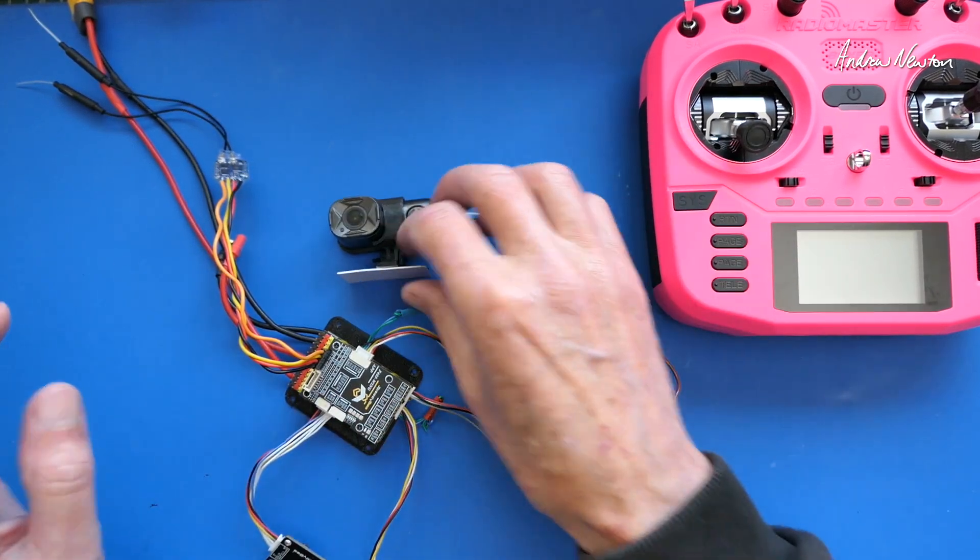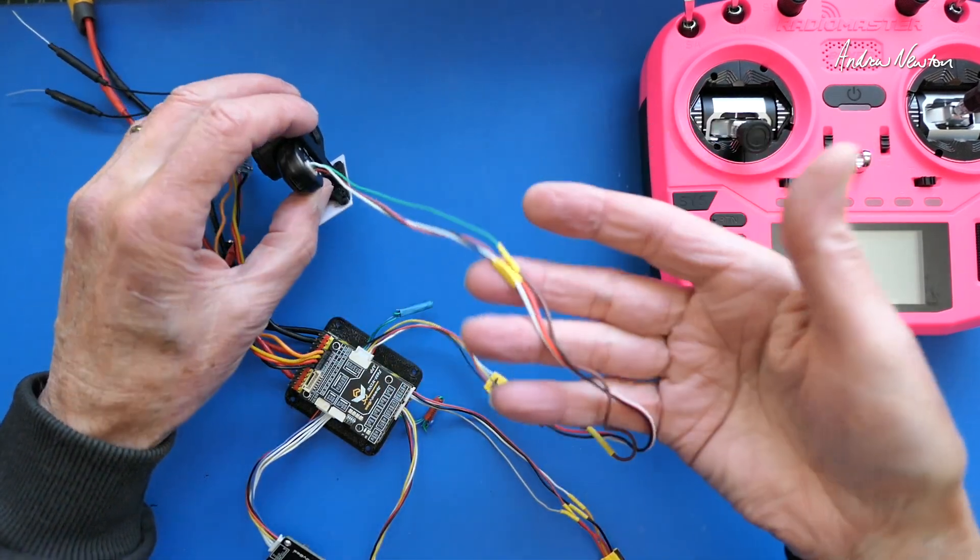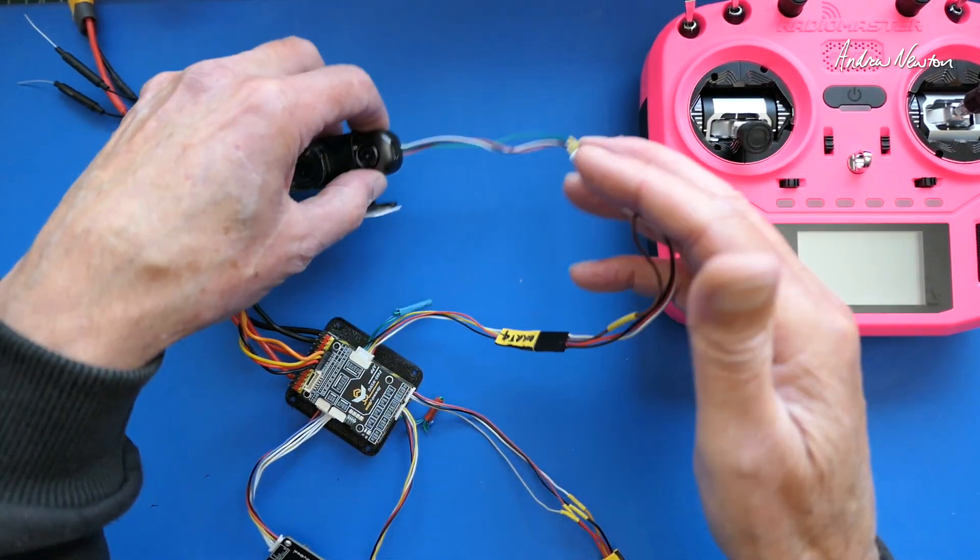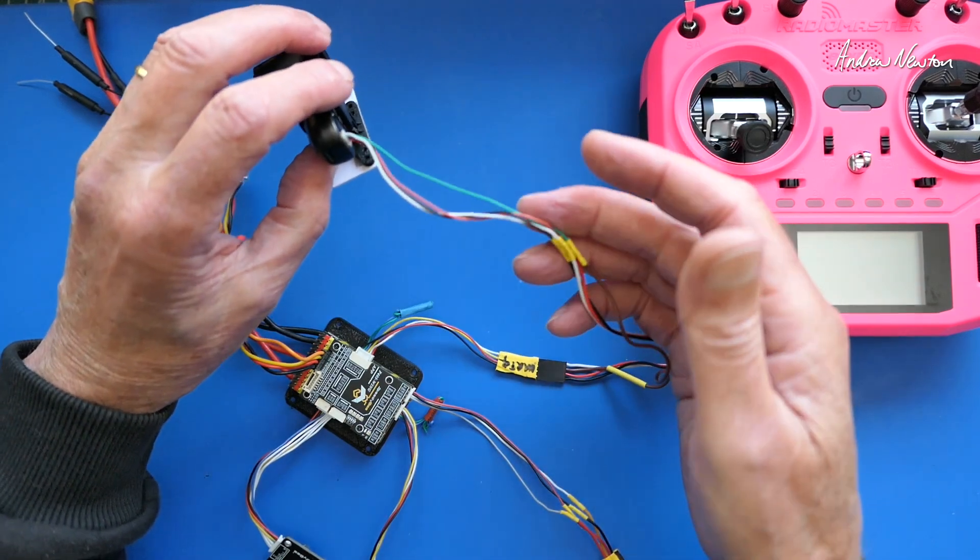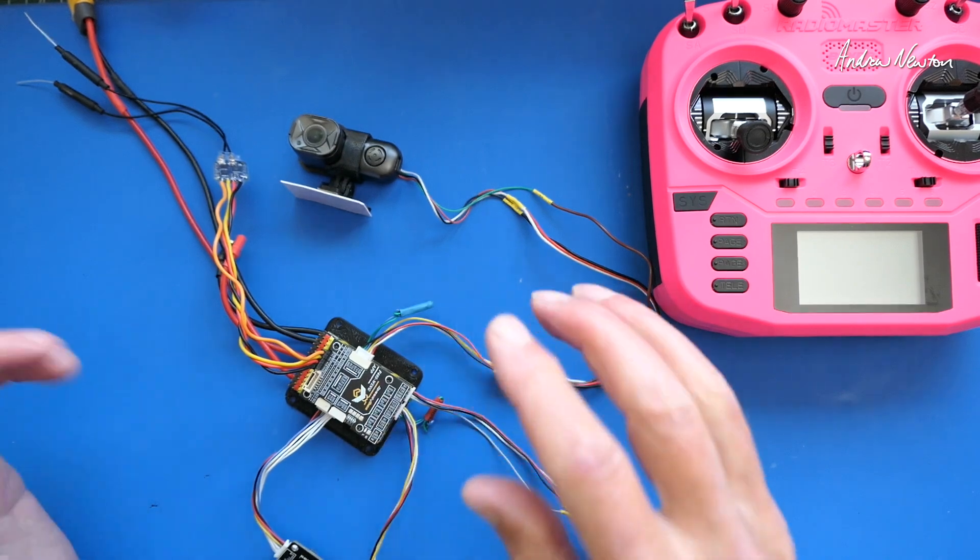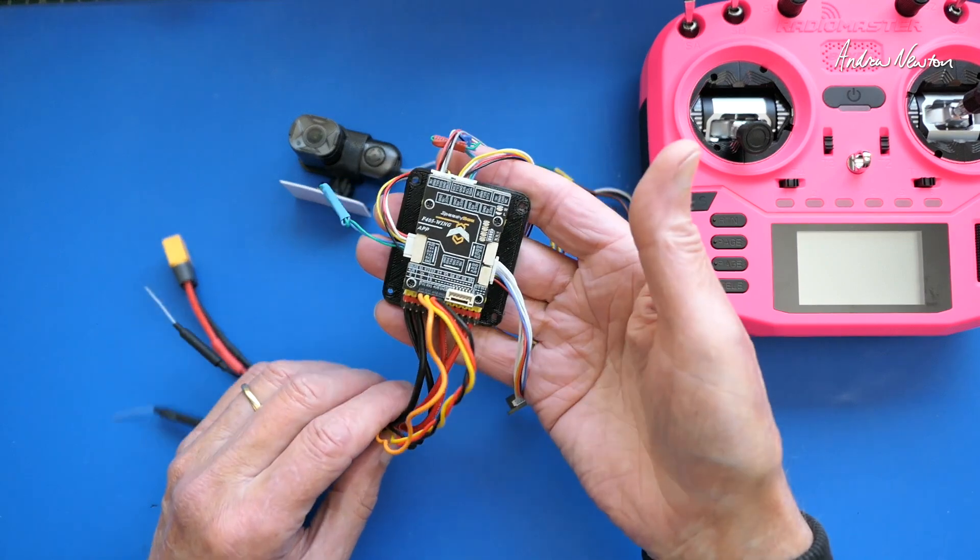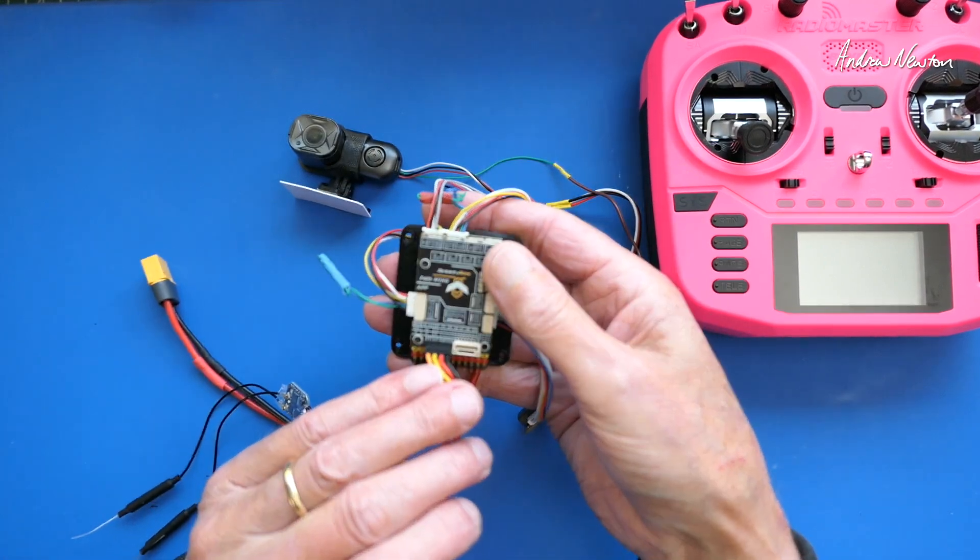It's all in the manual. You just have to solder up the UART cable that comes with the Runcam Thumb with the Power, Ground, RX and TX and plug that into a spare UART on whatever flight control board you're using. I'm using the Speedybee F405 wing for the demo.